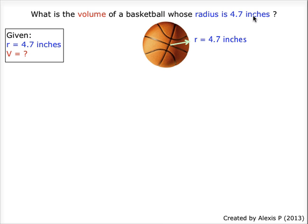Here, the volume and the radius, 4.7 inches, are our givens. We write this in a given box, where R is indicated in the color blue and V is indicated in the color red.